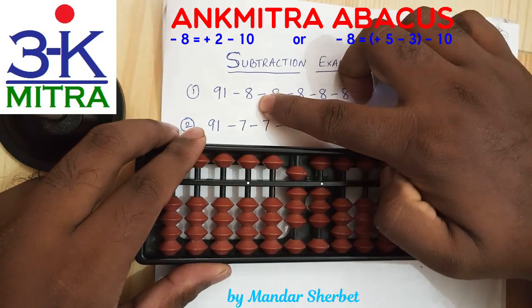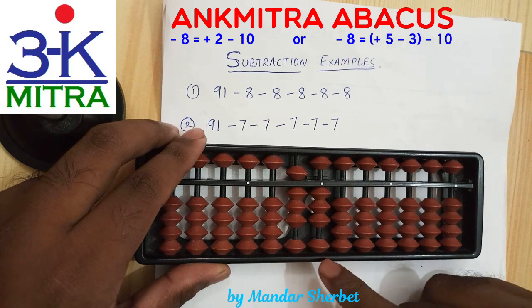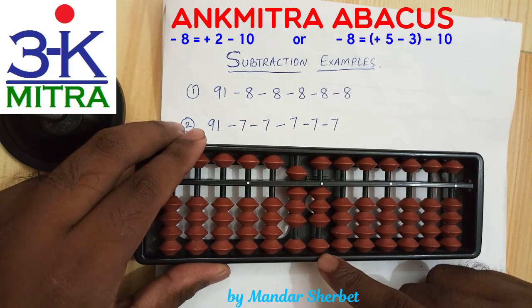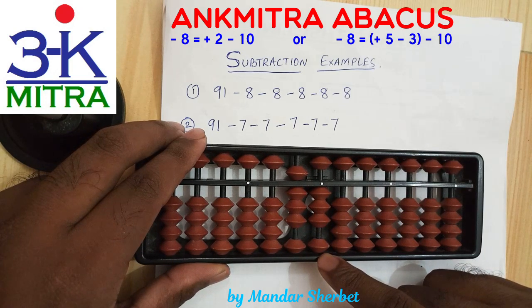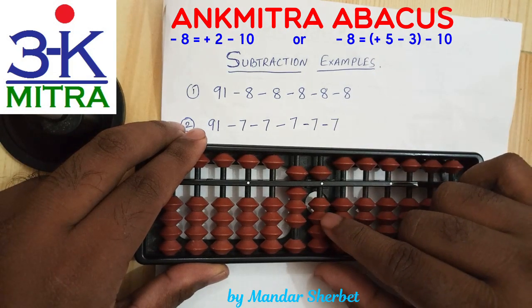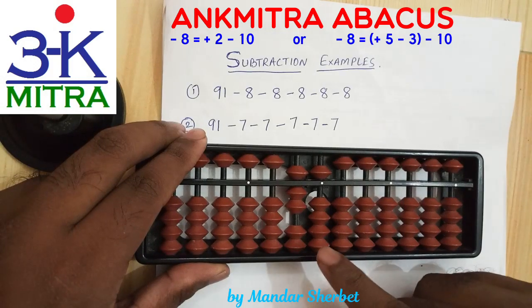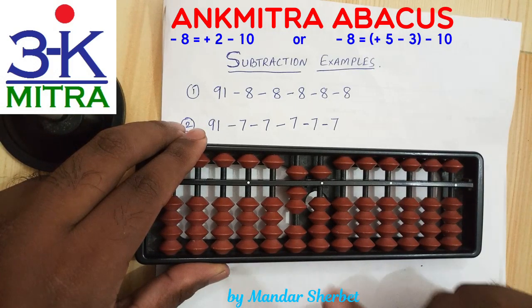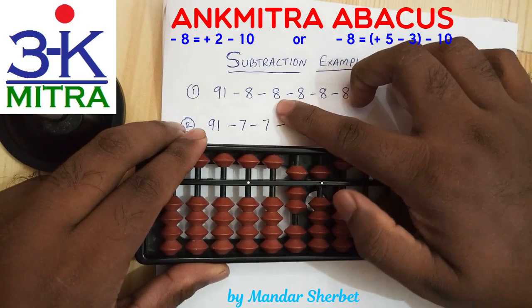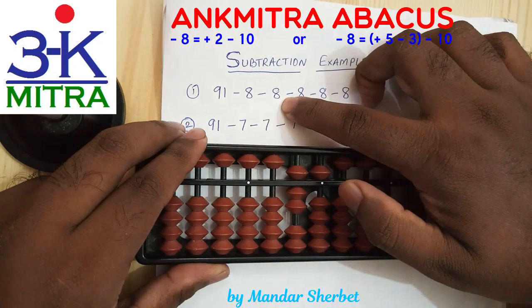Moving to the next 8 — do we have 8 beads available? We don't. So for subtracting 8 we need to add 2 and subtract 10 on the next left rod. But for adding 2 on this primary rod, we don't have 2 beads available. So we need to add 2 using the small friend formula. The small friend formula of plus 2 is plus 5 minus 3. So doing plus 5 minus 3, I finish the plus 2 part, then combine it with minus 10 to finish the subtraction of 8. This is the combination formula of minus 8: the plus 2 part is done using the small friend formula of plus 2, combined with minus 10.